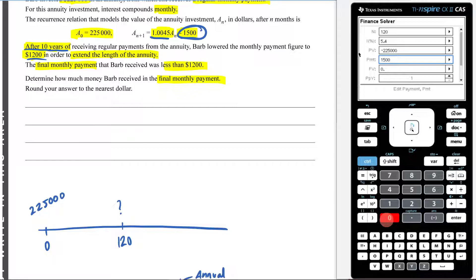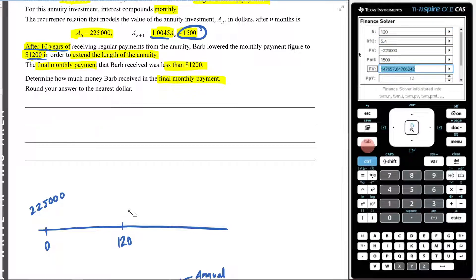The payment is going to be 1,500 because that's how much money I'm taking out within that first 10 years. And it's money that I'm taking out. It's now in my pocket. So it's positive there. I'm trying to figure out what the future value is going to be. That's what I'm trying to figure out there. My PBY will be 12 and my CPY will be 12 because it's compounding monthly. So now I can hit enter and I can figure out how much is going to be in my annuity after those first 10 years.